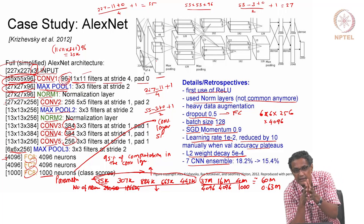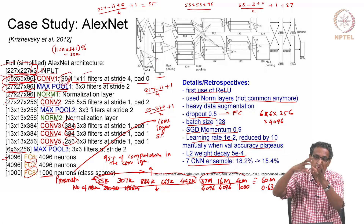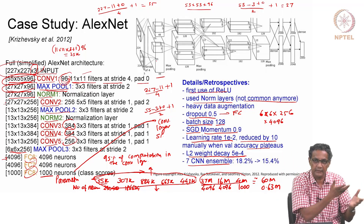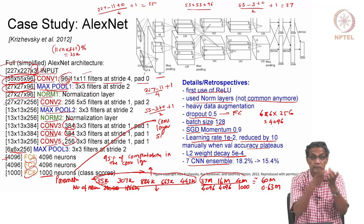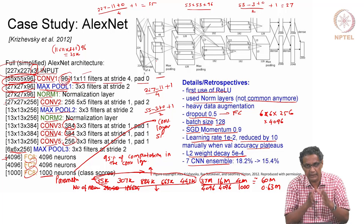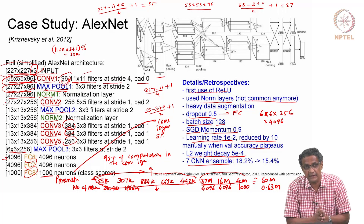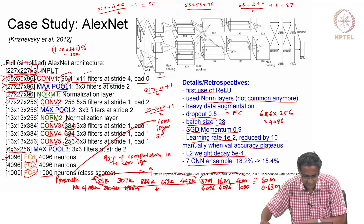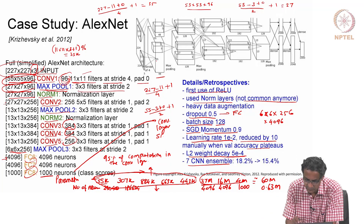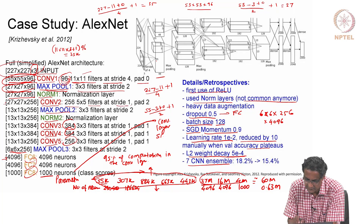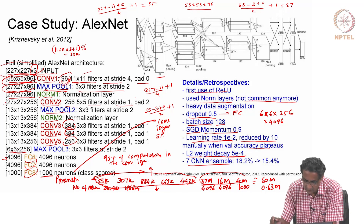When you keep saying representation that is what you mean - what is that subspace in which this whole thing is lying? If you're talking about faces, where is it lying? Similarly, all this feature representation we keep talking about is about getting there, and sometimes it is very explicit, sometimes it is for a task like classification. Then: norm1 - forget it, don't worry too much about it. Then again 256 filters of 5 × 5 at stride 1 and pad 2.